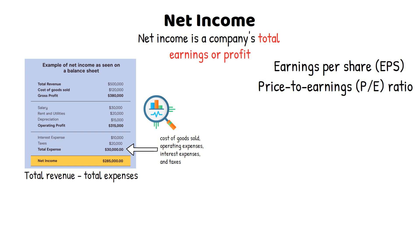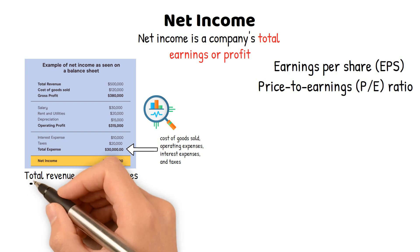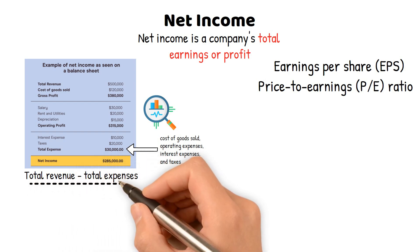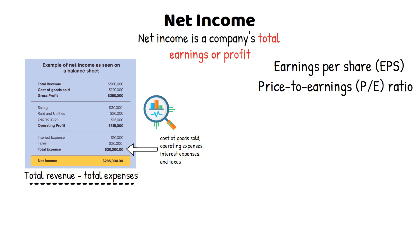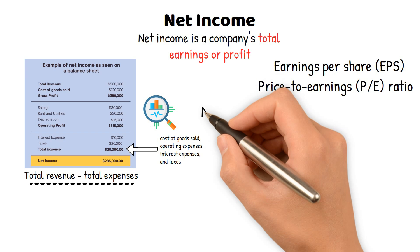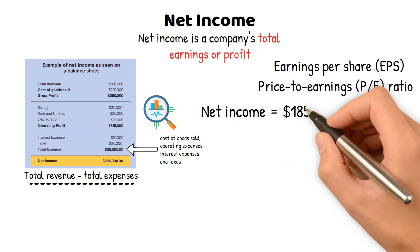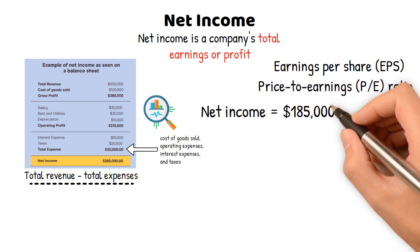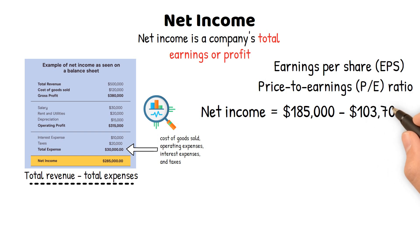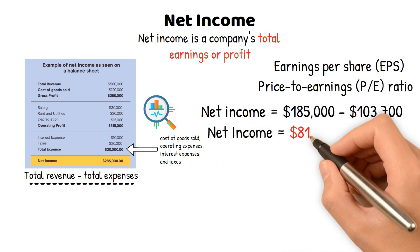To calculate the net income for the year, we need to subtract the total expenses from the total revenues. Net income equals total revenues minus total expenses. For example, net income equals $185,000 minus $103,700, which equals $81,300.